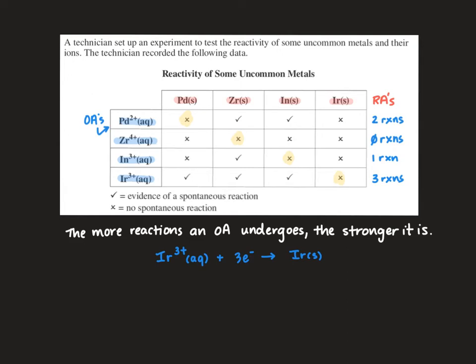Our next strongest oxidizing agent, two reactions, is palladium 2+. So palladium 2+ is going to go here. It will gain two electrons to form solid palladium.